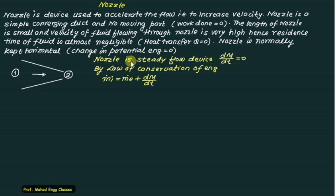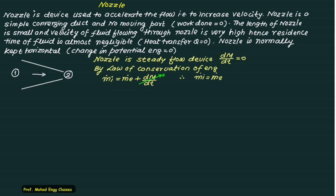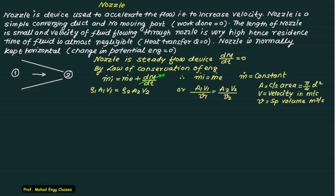The nozzle is a steady flow device, so there is no accumulation of mass inside the nozzle, meaning dm/dt is always equal to zero. By the law of conservation of mass, m-dot-inlet equals m-dot-exit plus dm/dt. Since dm/dt is zero, m-dot-in equals m-dot-out, and with single input and single output m-dot is constant. Since m-dot equals density times area times velocity, we can write: rho-1 times A1 times V1 equals rho-2 times A2 times V2.